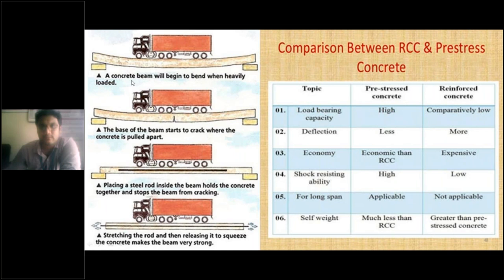A concrete beam will begin to bend when heavily loaded. Consider a simply supported beam with a vehicle passing over it. There is no reinforcement in the beam. When the vehicle comes at the center of the span, it starts bending due to the heavy load. In the second case, the base of the beam starts to crack, because concrete is in tension below the neutral axis, and the beam tends to form tensile cracks where the concrete is pulled apart.